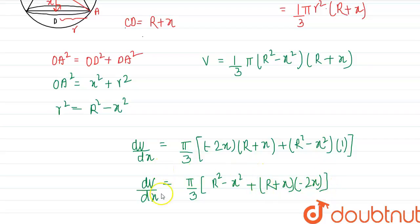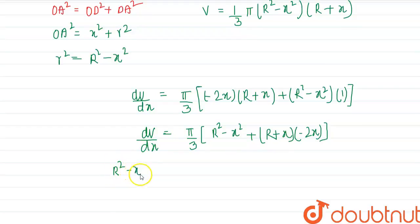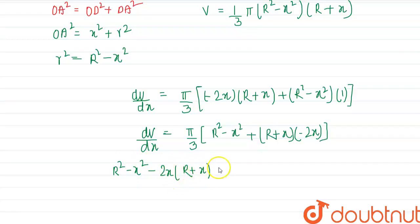Now we have the differentiation. We can equate it to zero to find the critical point: R² − X² − 2X(R + X) = 0.